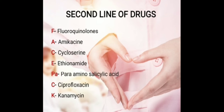Coming to the second line of drugs — to remember these, just remember the word FACE PACK. F for Fluoroquinolones. We know the word 'amigo' means friend, so A for Amikacin — he wants to be friends with somebody. So he is going on a Cycloserine — C for Cycloserine. And E for Ethionamide — that is the person he wants to make friends with. So: FACE — F for Fluoroquinolones, A for Amikacin, C for Cycloserine, E for Ethionamide.